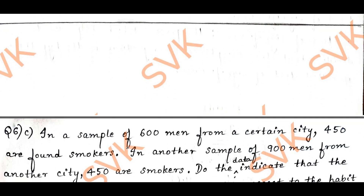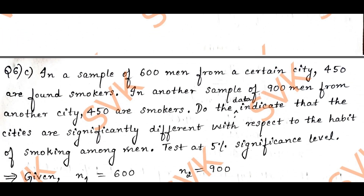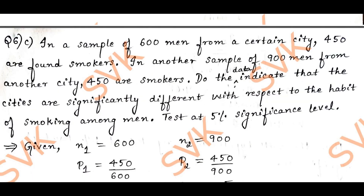Those who are not subscribed to my YouTube channel, do subscribe for upcoming model question paper solutions. Question 6c: In a sample of 600 men from a certain city, 450 are found to be smokers. In another sample of 900 men from another city, 450 are smokers. Do the data indicate that the cities are significantly different with respect to the habit of smoking among men? Test at 5% significance level.